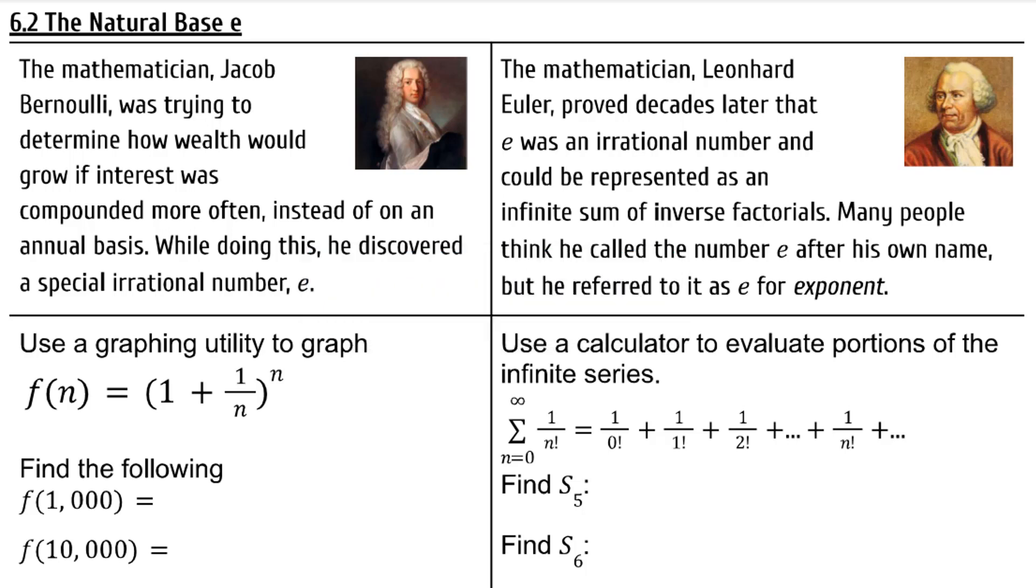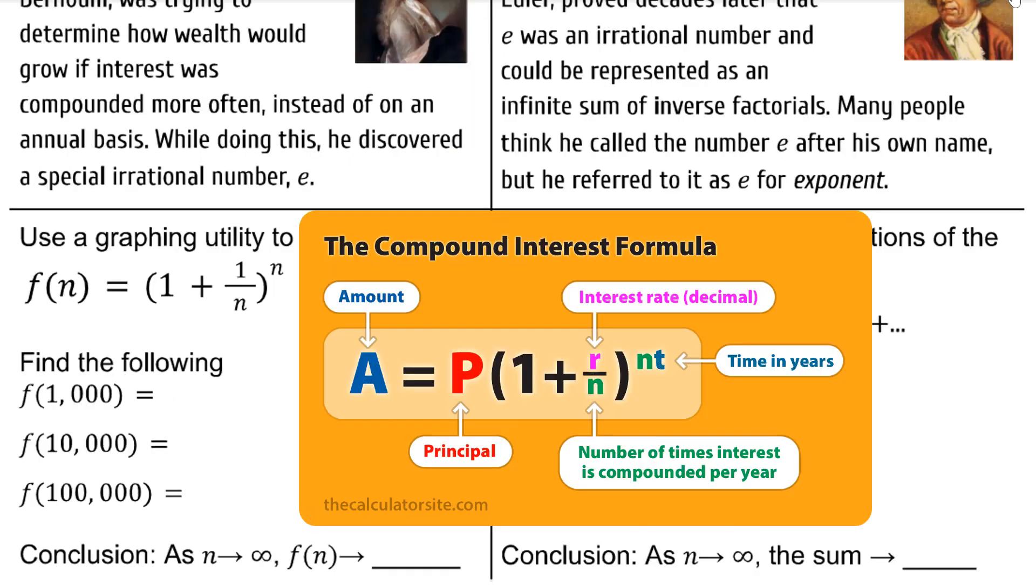Use a graphing utility to graph f(n) = (1 + 1/n)^n. This is a simplified version of our compound interest formula, where the principal, the interest rate, and the number of years t are all equal to 1. So we can isolate what's specifically happening when we change n, the number of times per year the interest is compounded.